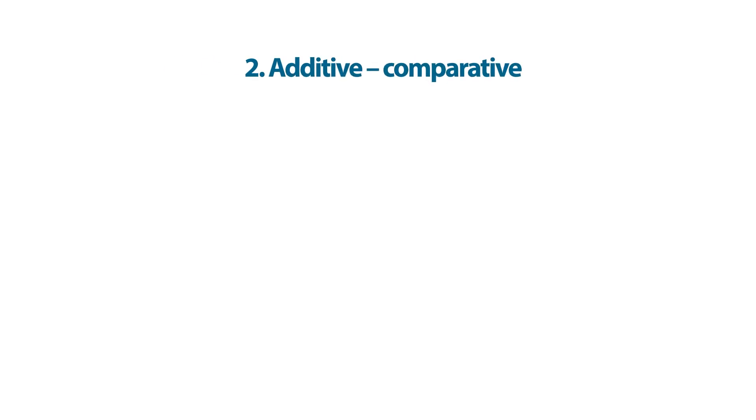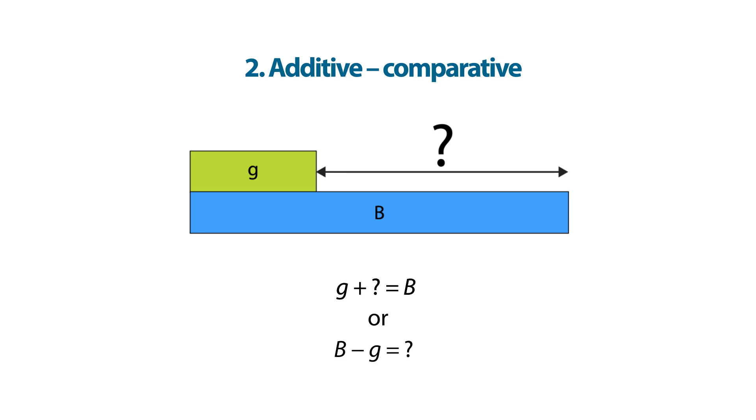Next, let's look at an additive relationship that involves comparison. Here we use the rods to model subtraction. By comparing the two known quantities, it is clear that we need to find a missing addend. In this example, the missing addend is dark green.